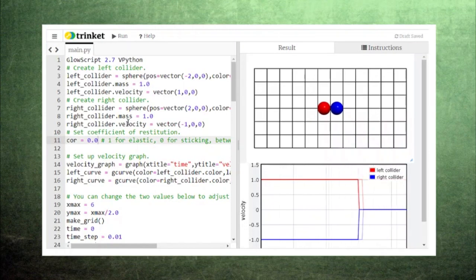We saw an example of a sticking collision in the previous episode when we used a coefficient of restitution of 0 with identical colliders moving at opposite velocities toward each other.